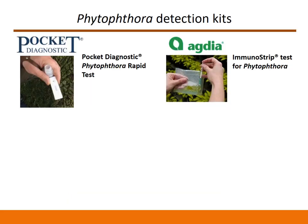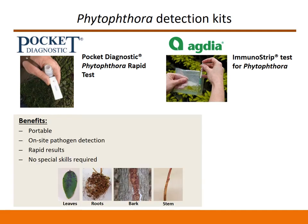There are two Phytophthora detection kits available in the market today. These are called the Phytophthora Rapid Test from Pocket Diagnostic and the Immunostrip Test for Phytophthora from Agdia. Depending on the number of tests you purchase, one test may cost somewhere between 6 to 12 US dollars. Both of these detection kits are portable, easy to use, and are well suited for on-site detections. Both tests can detect Phytophthora in less than 10 minutes and are less expensive than laboratory testing.